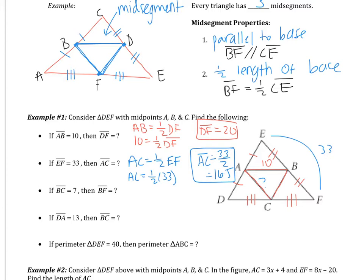Third one. If BC equals 7, then BF equals, okay, so right now we can't answer that the way that it's written. Change this BF to an AE. So if BC equals 7, what's AE?